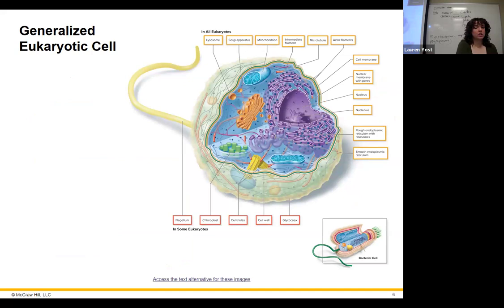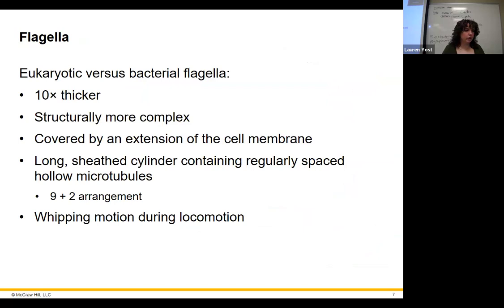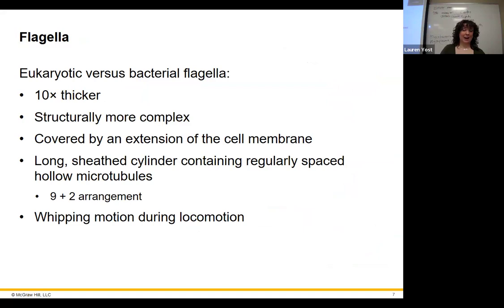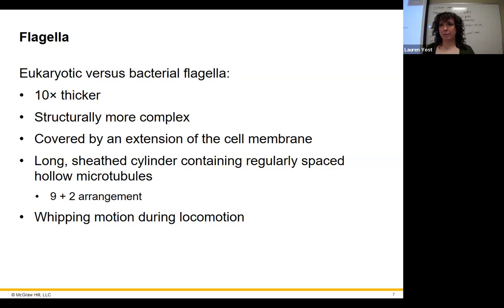Eukaryotic cells can have flagella just like bacteria, but they are ten times thicker than the bacterial ones and more complex structurally. They're an extension from the membrane. They have all these microtubules running through them — nine pairs and then two in the middle that give structure. They move in a whipping motion. Eukaryotes can control their direction much more effectively than bacteria because they're not relying on runs and tumbles.